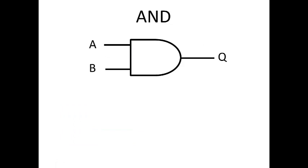Next we'll cover the AND gate. An AND gate takes two or more inputs. In our example here we're going to show with two inputs, A and B, and gives one output, which we'll use Q to refer to.